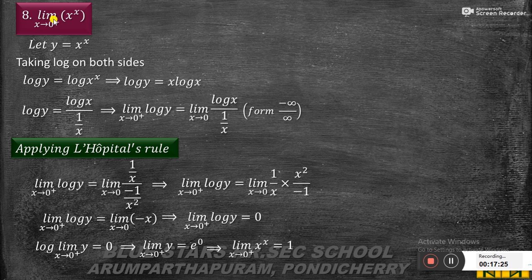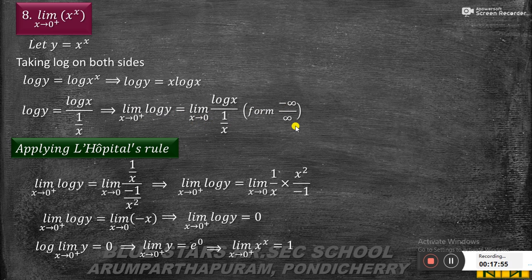The eighth problem: limit x tends to 0+ of x^x. Let y equal to x^x. Taking log on both sides: log y = log(x^x) = x·log x. We rewrite this as log y = log x by (1/x), so that as x tends to 0+, this becomes the form ∞/∞ — an indeterminate form.